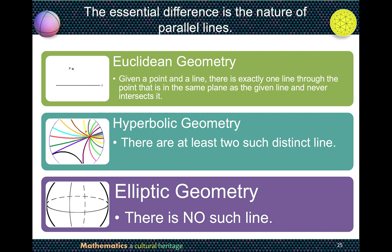The Playfair axiom is the equivalent of the fifth postulate. In Euclidean geometry, it means: given a point and a line, there is exactly one line passing through this point in the same plane as the given line that never intersects it. In hyperbolic geometry, there are at least two such distinct lines passing through the point parallel to the given line. While in elliptic geometry, there is no such line. The essential difference between Euclidean and non-Euclidean geometry is the nature of parallel lines.